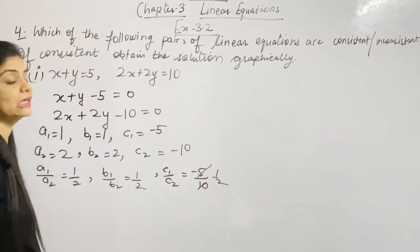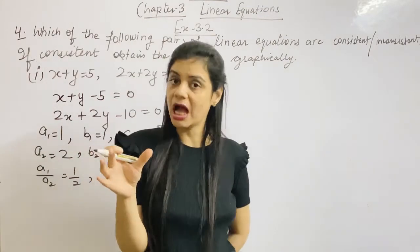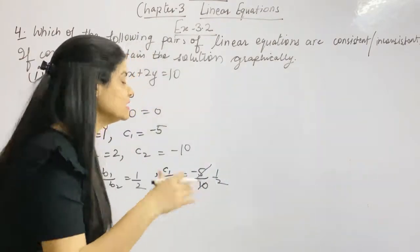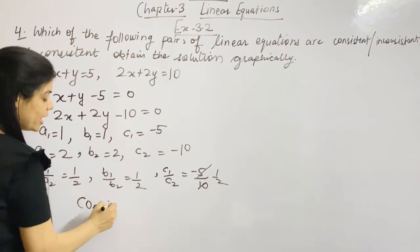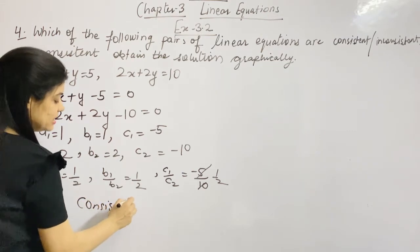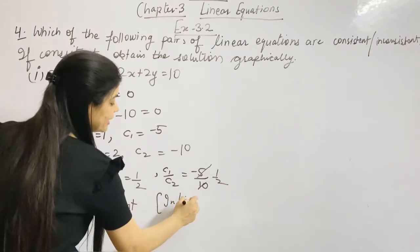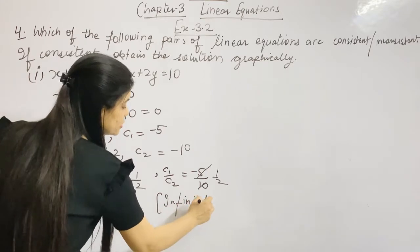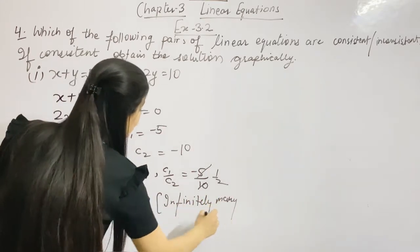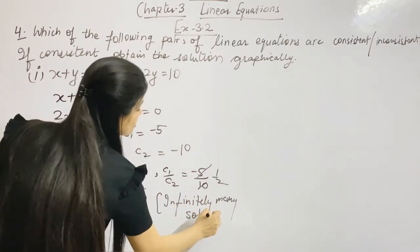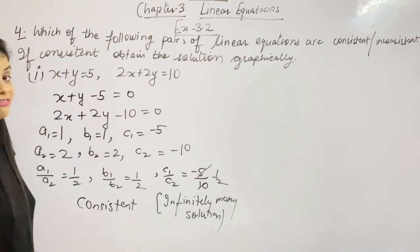Since A1/A2 equals B1/B2, we check C1/C2 which is also 1 upon 2. So this is the case of infinitely many solutions, which means it is consistent.